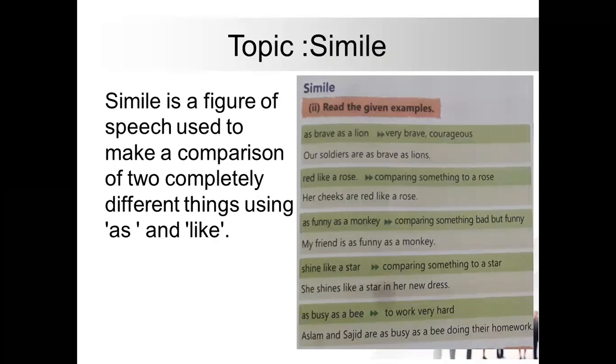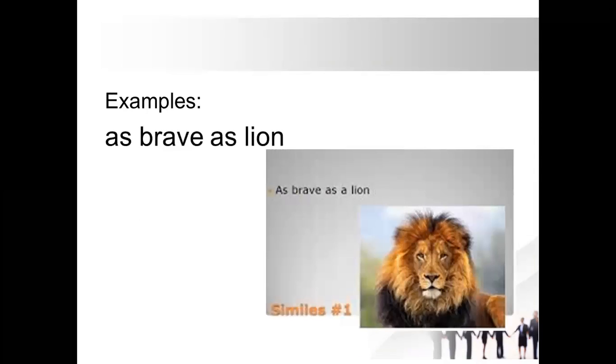In your book, different examples of similes are given. For example, 'as brave as a lion' means very brave or very courageous. Our soldiers are very courageous. Our soldiers are as brave as lions. 'Red like a rose' compares something to a rose, like beautiful. Her cheeks are red like a rose.